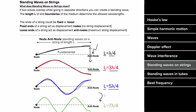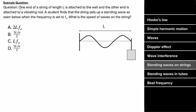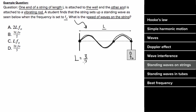Here's a standing waves on strings example. One end of a string of length L is attached to the wall, the other to a vibrating rod. The string sets up a standing wave when the rod frequency is F-naught. From the diagram, the string length L equals three halves of a wavelength, so the wavelength is 2L/3. Since wave speed equals wavelength times frequency, the speed equals (2L/3) times F-naught. The best answer is D.